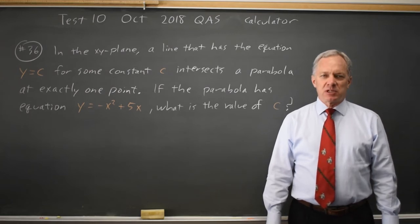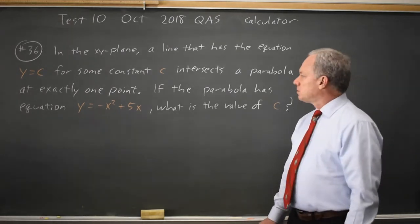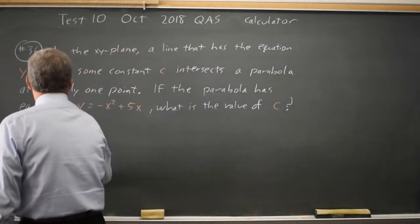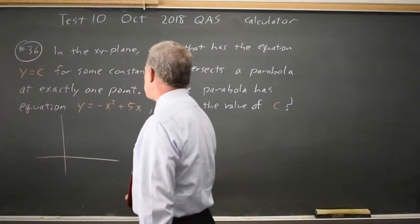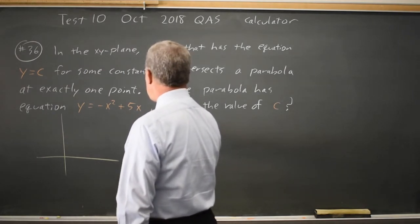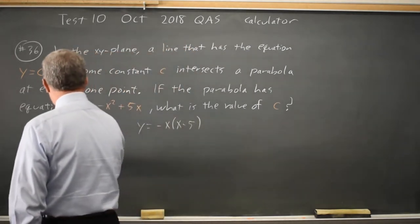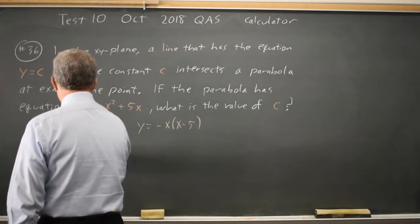This is question 36. College Board is asking for a value on a parabola where the equation of the parabola is y equals negative x squared plus 5x, which is y equals negative x times x minus 5. That has zeroes at x equals zero and at x equals 5.